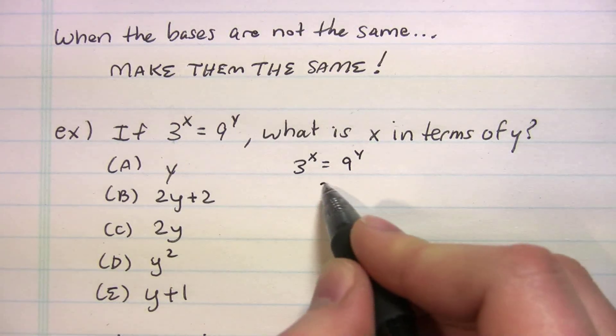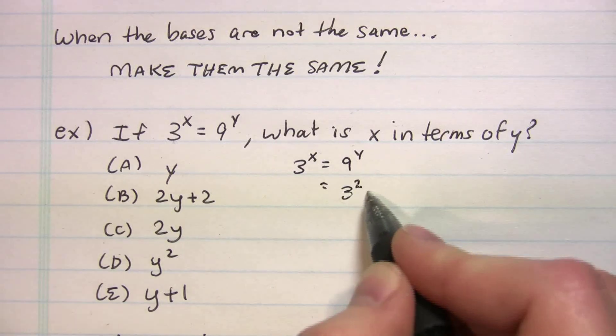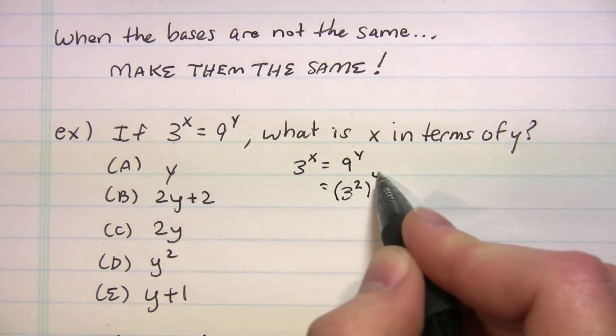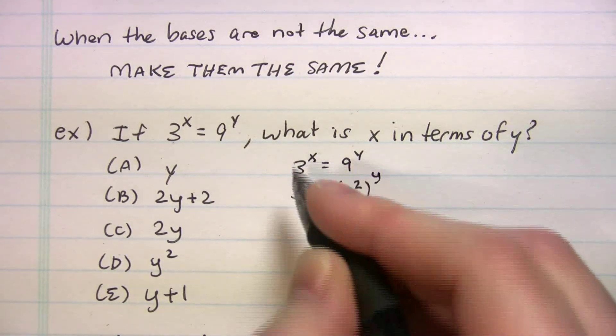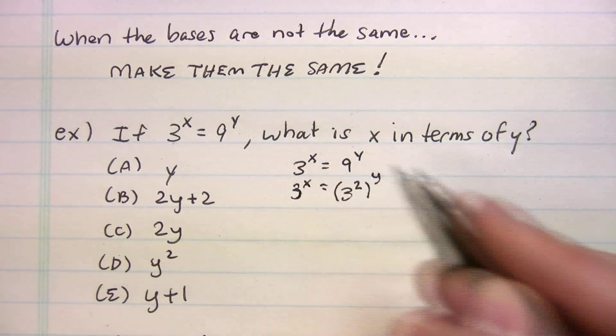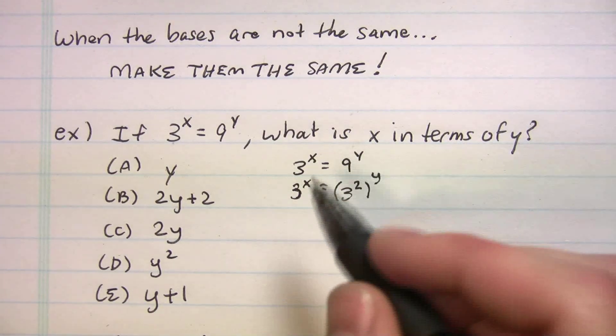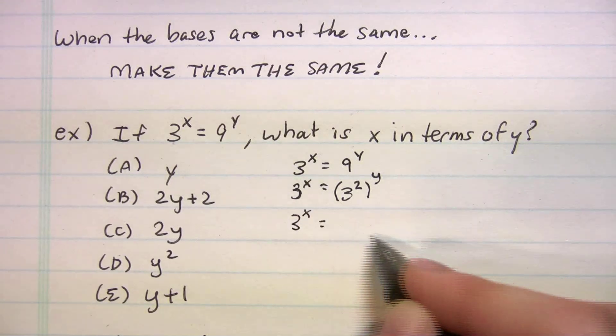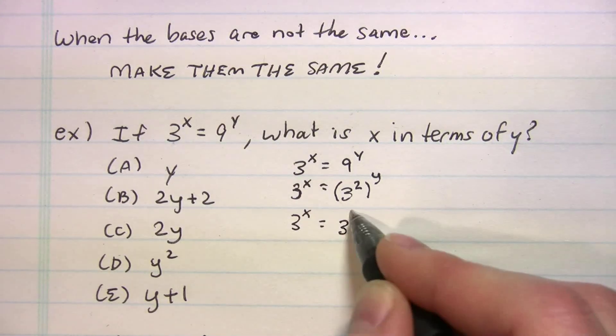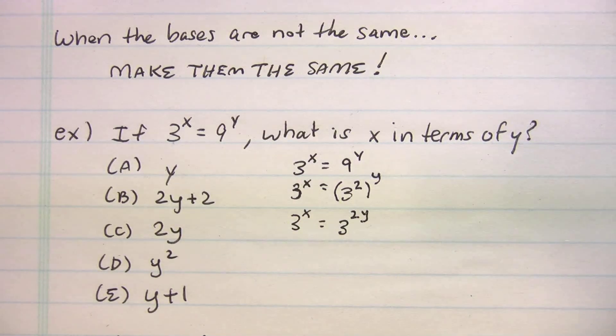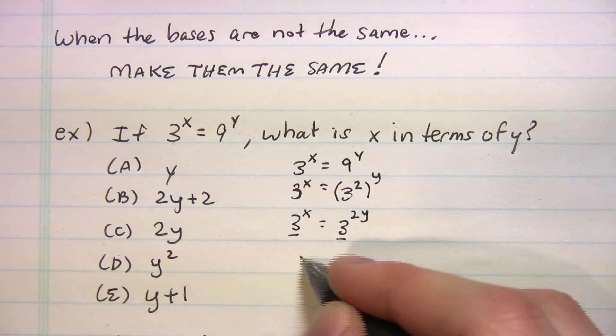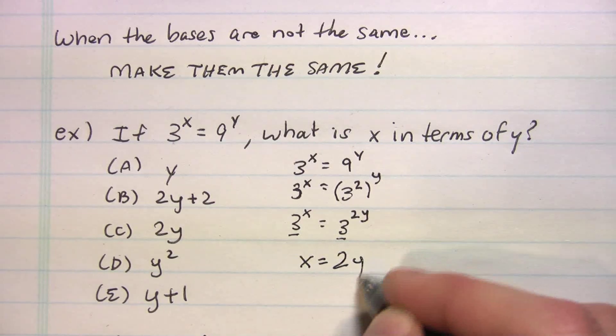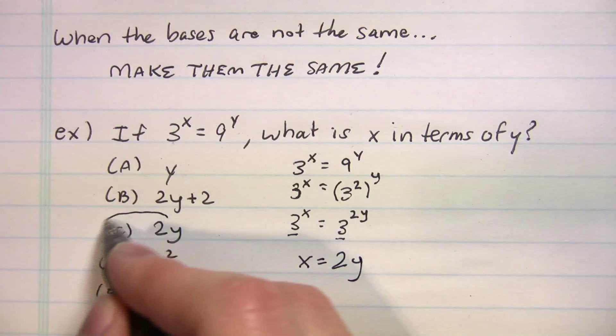Well, we know nine is three squared, right? Now, we can't forget that it's being raised to the y. Let me just fill in the left side here. So, when I raise a power to a power, I multiply, right? So, that's three to the two y. So, now that my bases are equal, I can set my exponents equal. So, x equals two y. Choice C.